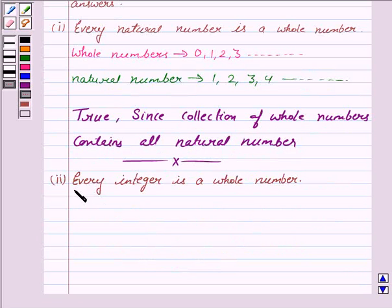Now, the second statement is, every integer is a whole number. Now, the integers are negative and positive both.